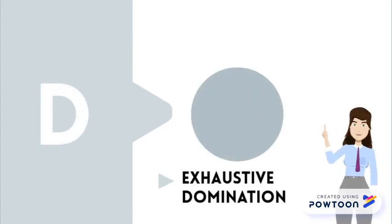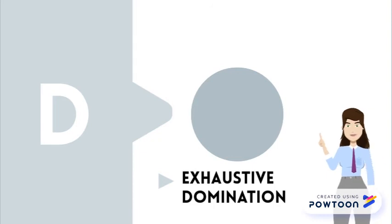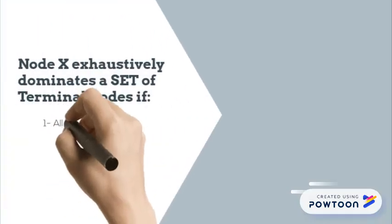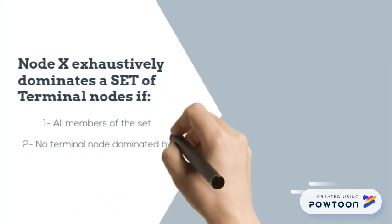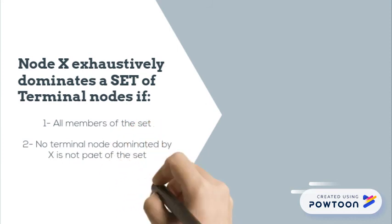Let's talk about another kind of domination that is exhaustive domination. The term exhaustive means that you're using up everything. Here 1. All members of the set should be dominated. 2. No terminal nodes dominated by X is not part of the set.